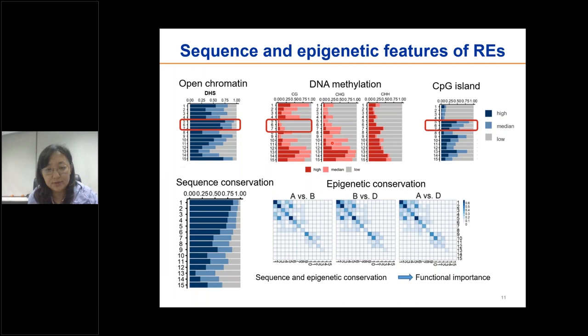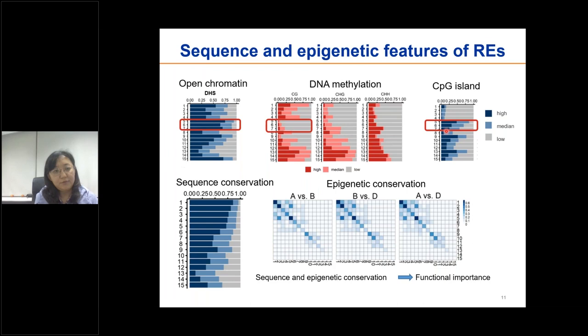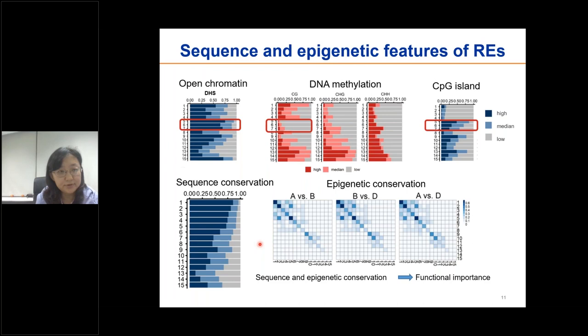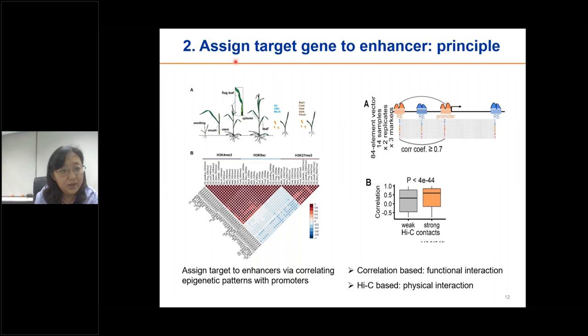We next examined the genetic and epigenetic features of different chromatin states. These chromatin states were characterized by a high degree of chromatin openness, low DNA methylation levels, and abundant CpG islands, all of which are typical features of active regulatory activity. In addition, conservation implies biological significance. Regions in these states are most likely functionally conserved, given the highly conserved sequences and epigenetic activities. The targets of the enhancers were assigned through correlating epigenetic patterns with promoters.